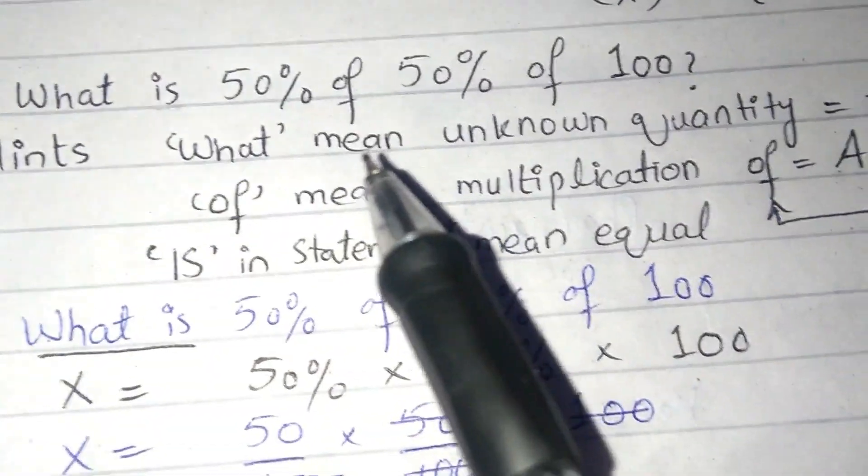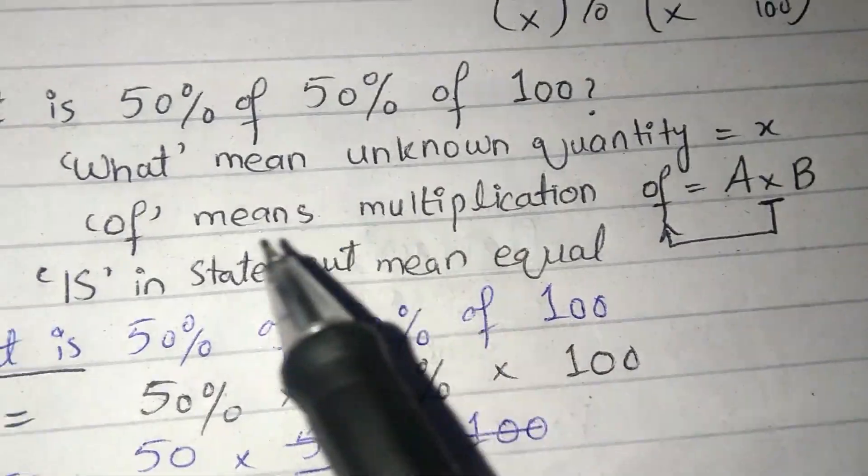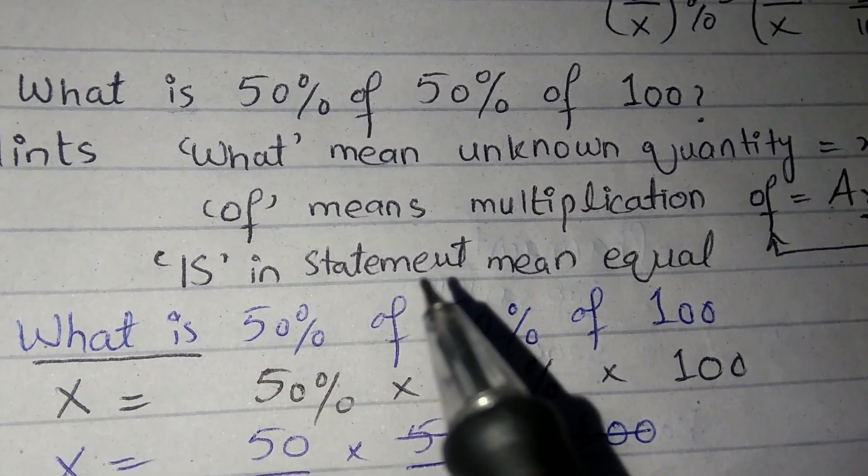Let's look at what means unknown quantity equal to x. Of means multiplication and this statement means equal.